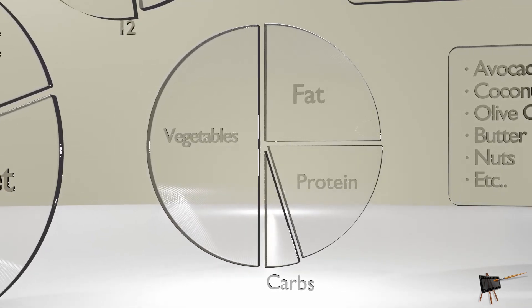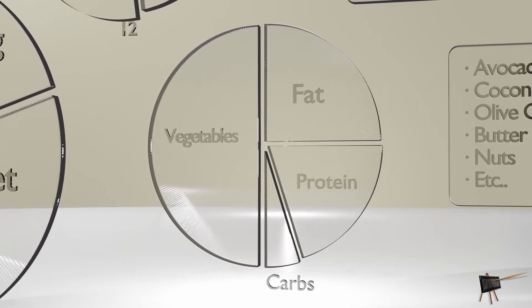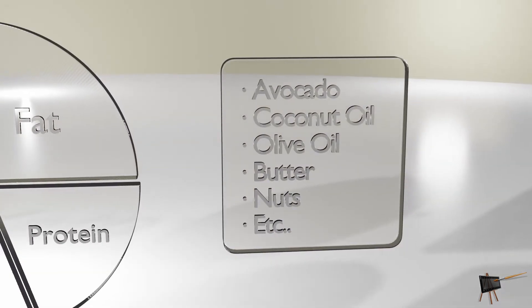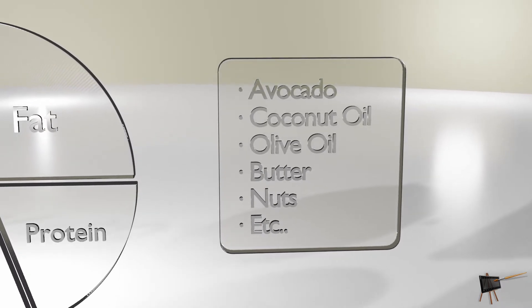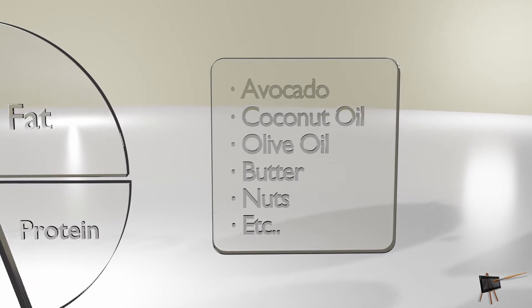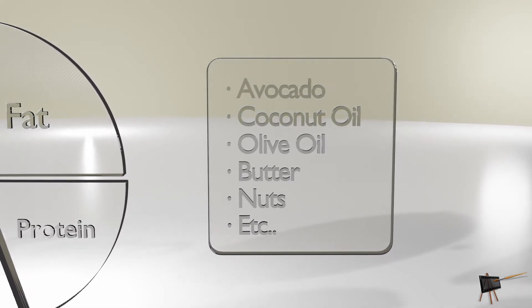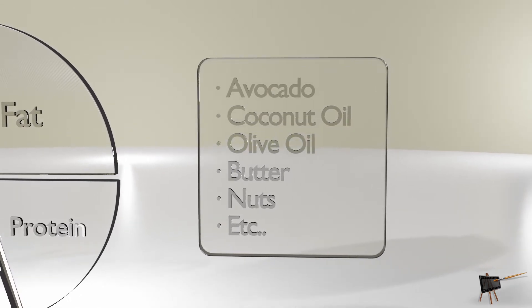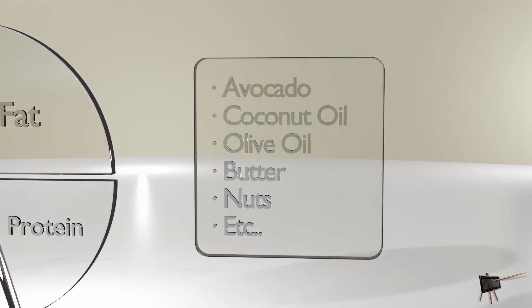Fats include avocado, which is really great, bacon, oils such as coconut oil and olive oil. Nuts—go easy on the nuts because they're high in omega-6, which gives you a lot of inflammation. But almonds, for example, are a good source of fat.